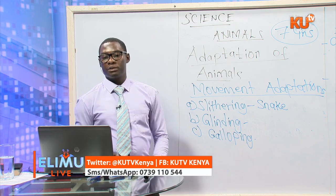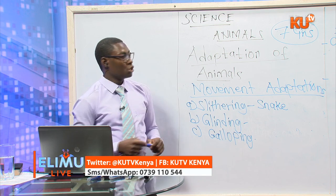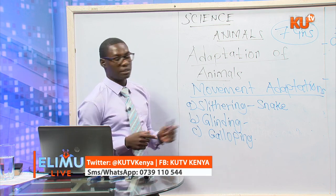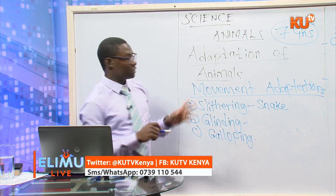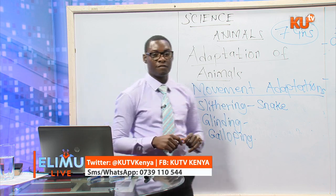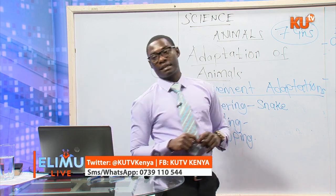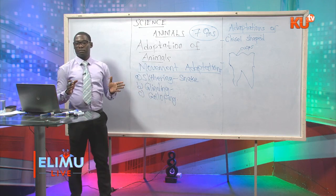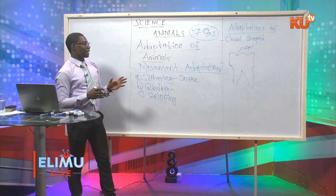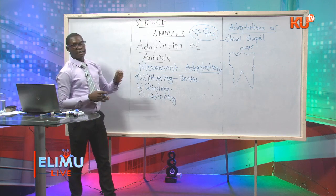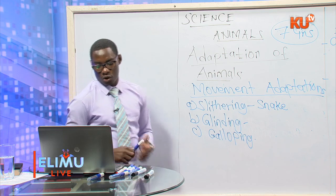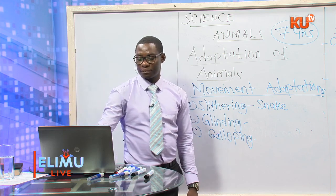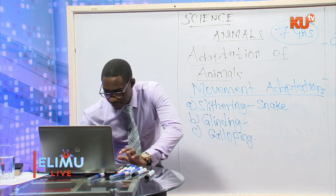In 2019, two questions on adaptations of animals were set, both from class 8 content. One was on movement — swimming and flying — and the other was on adaptations in herbivorous animals.